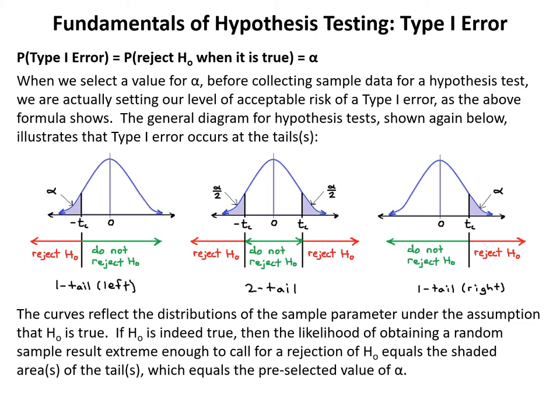The curves reflect the distributions of the sample parameter under the assumption that H₀ is true. If H₀ is indeed true, the likelihood of obtaining a random sample result extreme enough to call for rejection of H₀ equals the shaded tail area(s), which equals the pre-selected value of alpha.